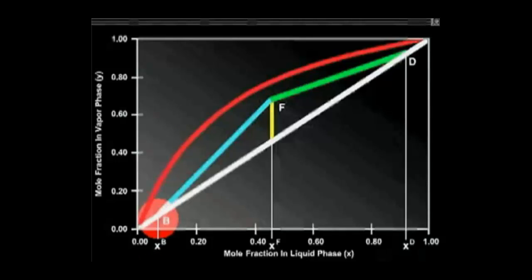The equilibrium curve gives the vapor-liquid relationships between yn and xn above the feed, and between ym and xm below the feed.